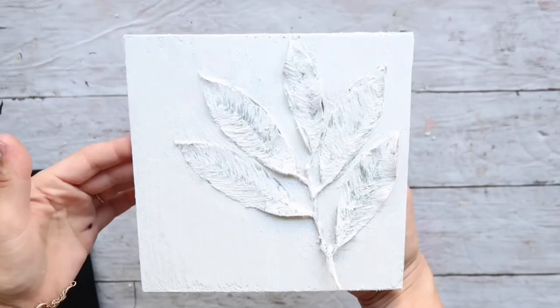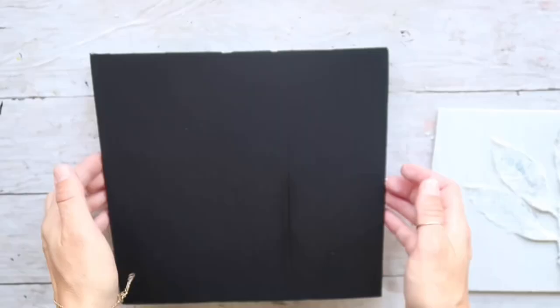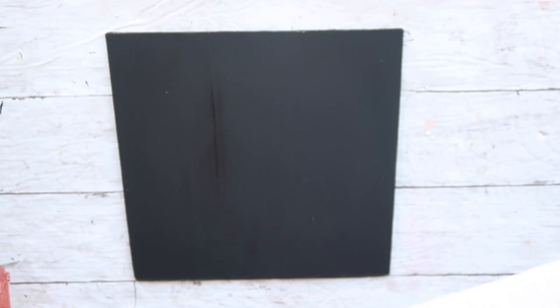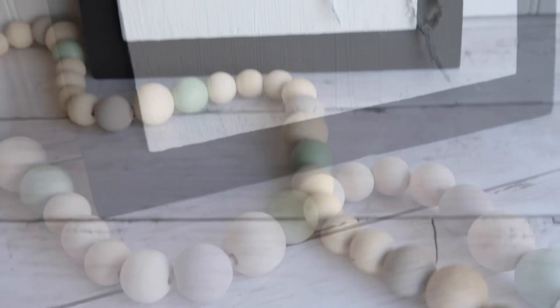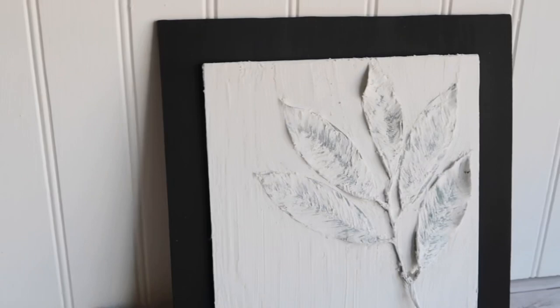And then when everything was done this is how it looks like. Now I'm just going to add few dabs of hot glue on the back of that white piece and attach it to the black one, and that's going to be it for this project. What I love about this project, it was first how easy it was to create, second how inexpensive, and the third how beautiful and modern looking it looks. I love the contrast, I love that again cement look.